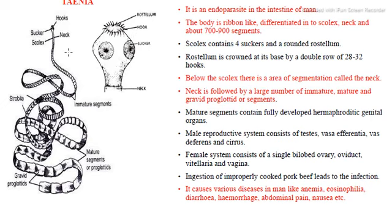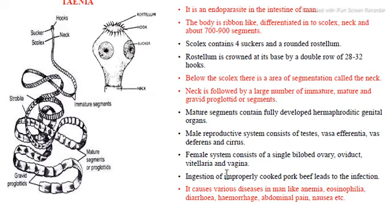The neck region is present below the scolex, from which segments are formed. Each segment, called a proglottid, contains male and female reproductive systems. If infection occurs, the resulting diseases and symptoms include anemia, reduced oxygen levels, eosinophilia, diarrhea, hemorrhage, bleeding, abdominal pain, nausea, and others. The next phylum is Annelida.